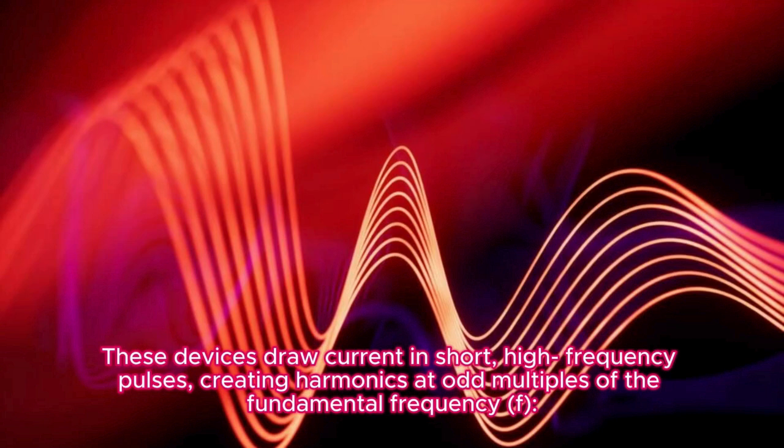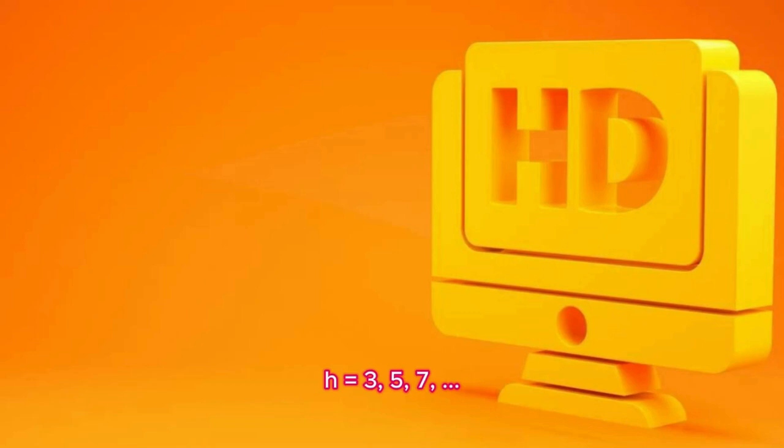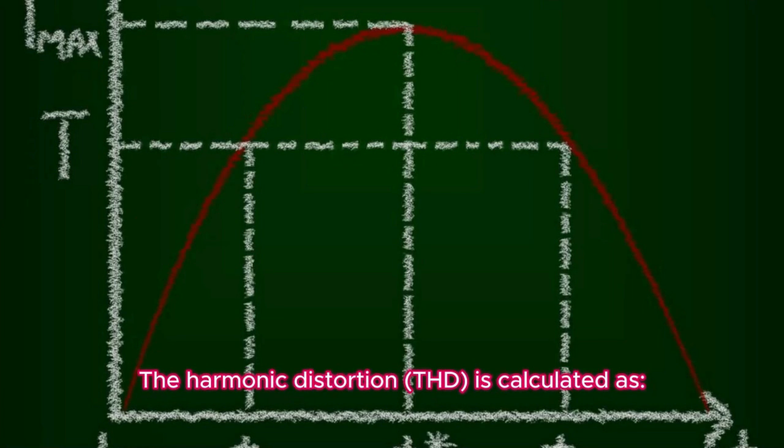This creates harmonics at odd multiples of the fundamental frequency: f_h = n·f where n equals 3, 5, 7. The harmonic distortion is calculated as THD.